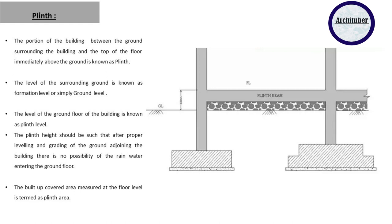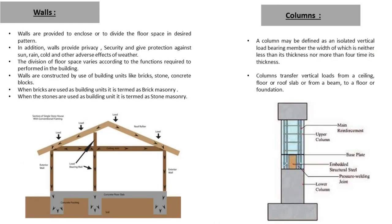After plinth, you have the floor slab, also known as plinth slab. Now discussing about walls and columns — these are the vertical supports used in buildings for enclosure of space or to divide floor space in the desired pattern. Walls provide privacy, security, and give protection against sun, rain, cold, wind, and other adverse weather effects. Walls are constructed using different materials nowadays like brick, stone, and concrete blocks. If you build with brick it is known as brick masonry, whereas if you use stone it is termed as stone masonry. There are different types of brick masonry and stone masonry also, which will be discussed in separate videos.